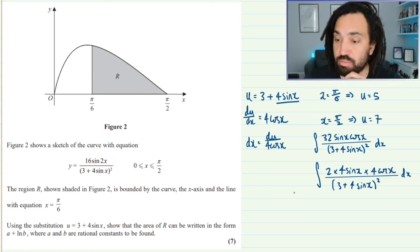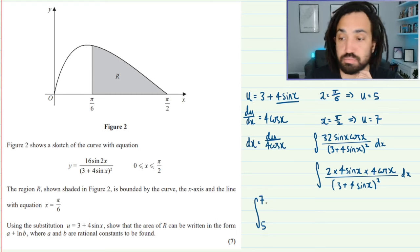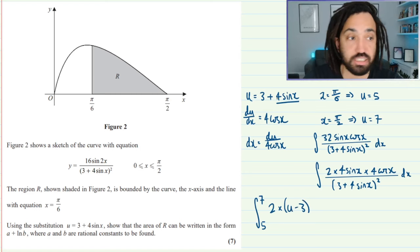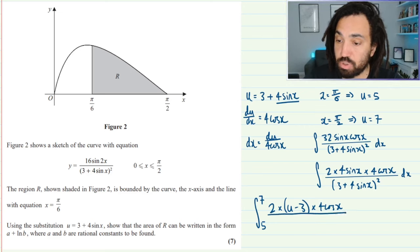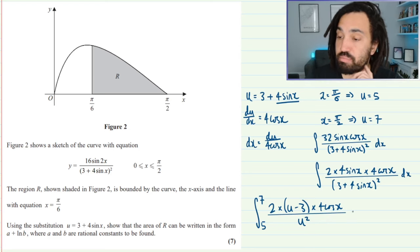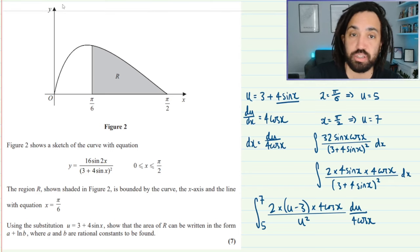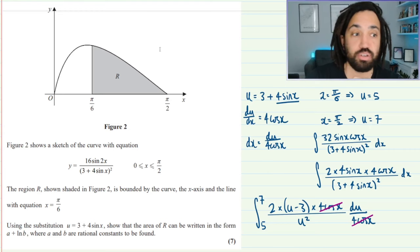Okay right so now I am ready to transform this perfectly in terms of u. So the limits are 7 and 5, we're going to have a 2 on the top. Now 4 sin x that's going to be u minus 3 just by rearranging this and I'm going to keep the 4 cos x there because I know that's going to cancel. On the bottom we're going to get u squared and dx is going to be du over 4 cos x. Great so we can do that canceling there, that's going to cancel with that. And now we're perfectly in terms of u.